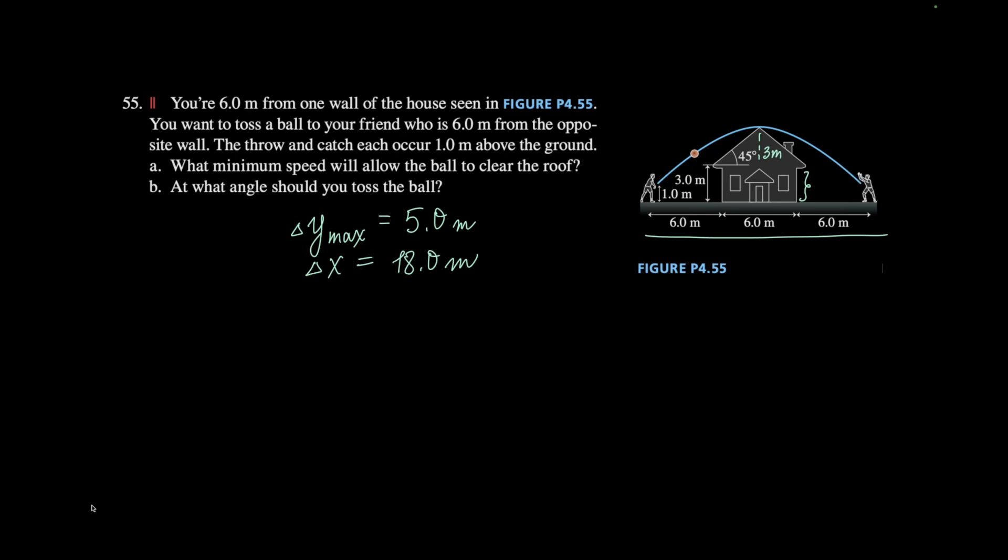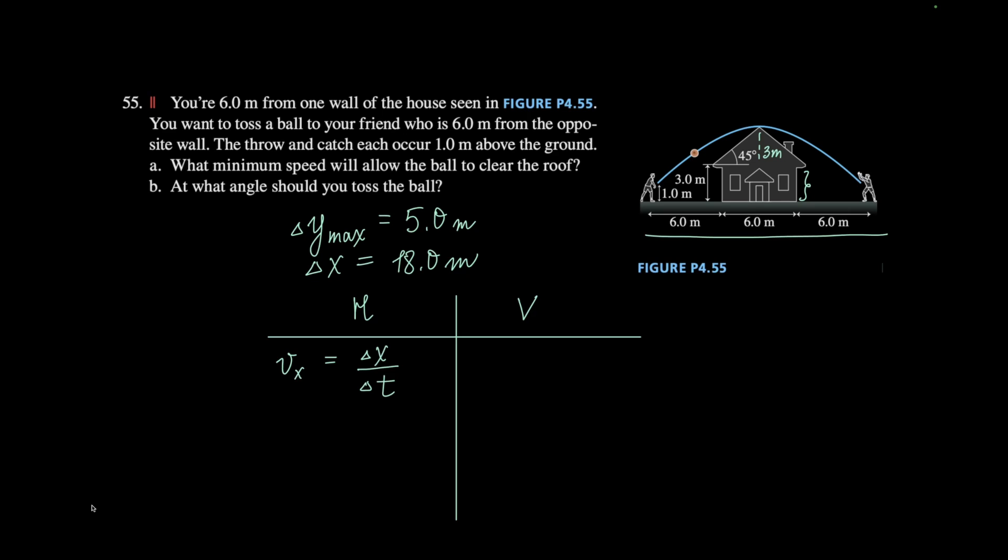In order for us to know the minimum horizontal speed, our only option horizontally would be to find the time, and then do the vx equals change in x, which we know to be 18 meters, divided by that change in time. The only way we can figure out the change in time is through the vertical part.